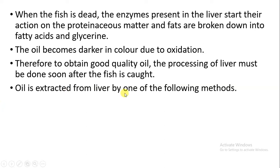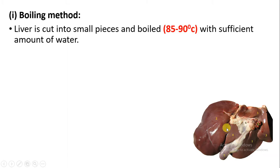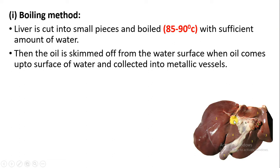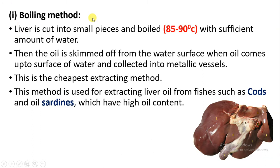There are several methods to extract oil from the liver. The first is the boiling method: the liver is cut into pieces and boiled in water at about 85 to 90 degrees Celsius. The oil is released and removed from the water surface, then collected in a metallic vessel. This boiling method is the cheapest method to obtain the oil. Other fishes like cod and sardine are also used to remove the liver so that oil can be obtained.